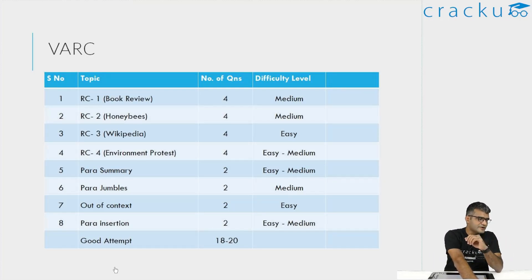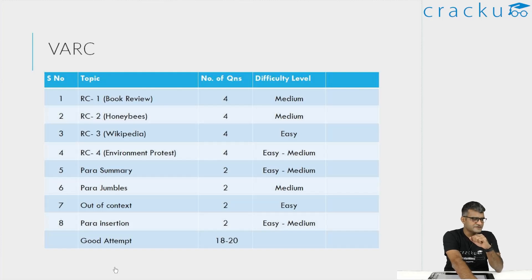Coming to the verbal section, there were eight questions. Looking at the para summaries, one of them was easy and one was slightly on the medium side. Overall, I would say para summaries were medium-level difficulty.